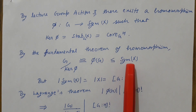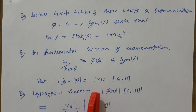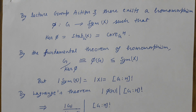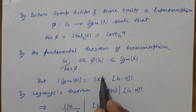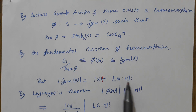φ(G) is a subgroup of Sym(X). The order of Sym(X) is the order of X factorial. Since the order of X is the index of H in G, the order of Sym(X) is the factorial of the index of H in G.